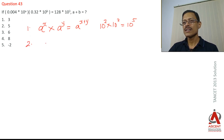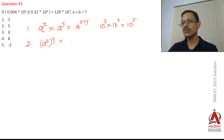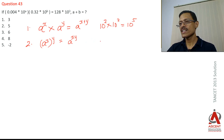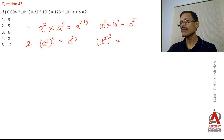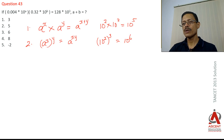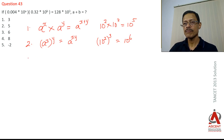Rule number 2: a^x raised to the power of y equals a^(xy). For example, if you take 10² raised to the power of 3, this is not 10^5 — it is 10^(2×3) = 10^6. So a^x raised to the power of y equals a^(xy).